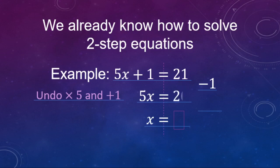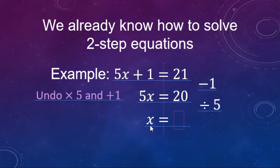The only arithmetic we're doing is 21 minus 1, and that's going to make 20. Now we have to undo the times 5, and we're going to undo a times 5 with a divide by 5. The 5x divided by 5 just makes x, so 20 divided by 5 makes 4. So 4 is the value for x that makes this equation true.